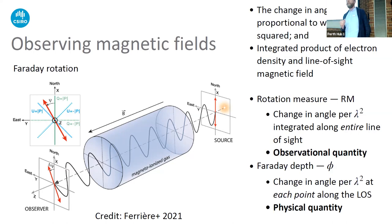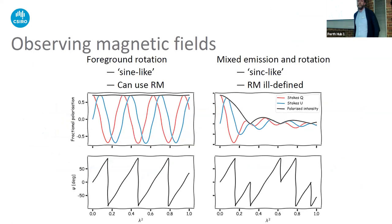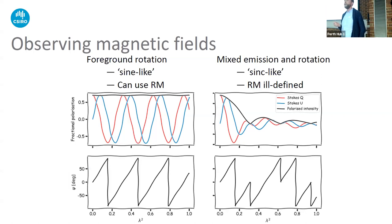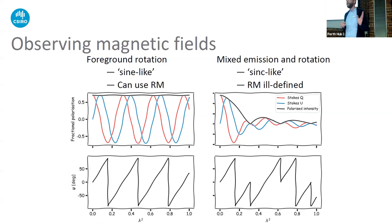The Faraday depth, while similar to the rotation measure, is actually a truly physical quantity — similar to optical depth — and can be defined for every point along the line of sight. An important thing to note is how polarized signals appear when observed. Faraday rotation goes by a factor of wavelength squared, so for a simple foreground screen we get a sinusoidal oscillation in Stokes Q and U — a constant turning of polarization angle as a function of wavelength squared. Even in a simple model, any mixed emission and rotation can start to produce sinc-like depolarization. To discriminate between scenarios, we need observations of many values of wavelength squared.